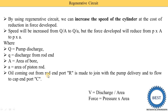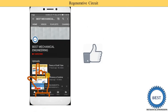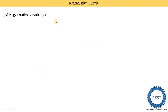Oil coming out from the rod end port is made to join with the pump delivery and flow to the cap end port. Oil coming out from the pump and oil coming out from the rod end port are mixed, then supplied to the directional control valve, and from the directional control valve they are supplied to the cap end port of the cylinder. I request you to like the video and subscribe to my channel for more videos related to hydraulics and other mechanical engineering subjects.